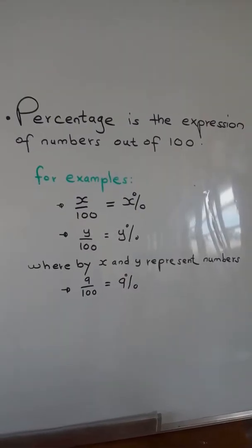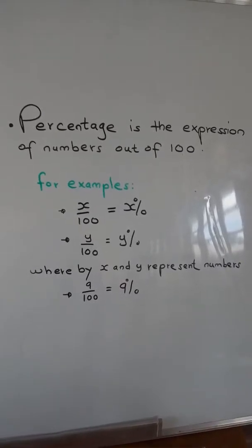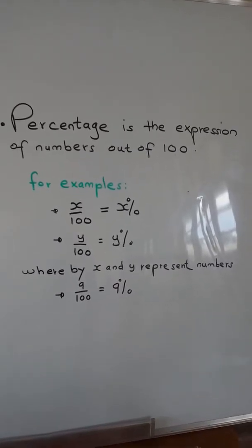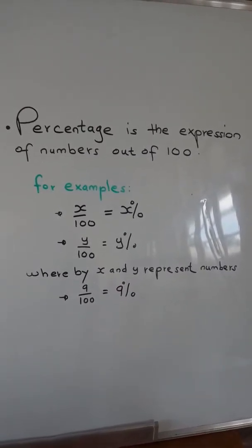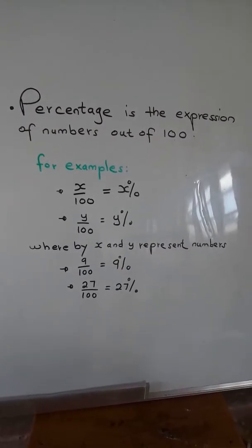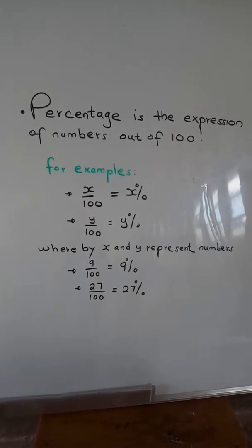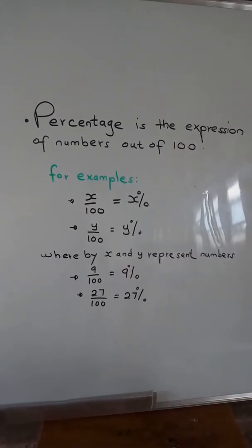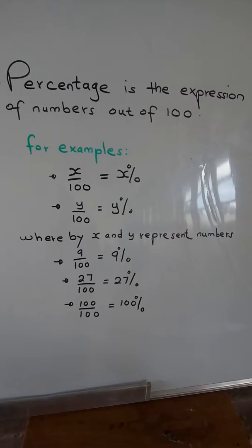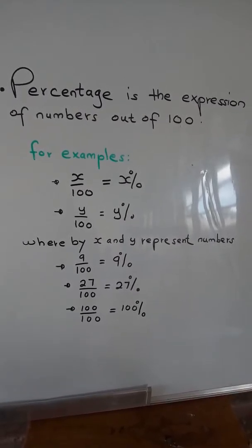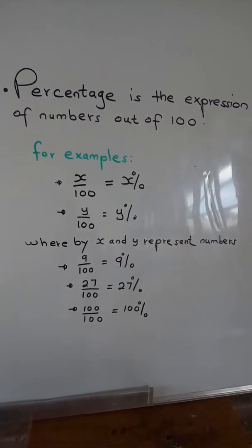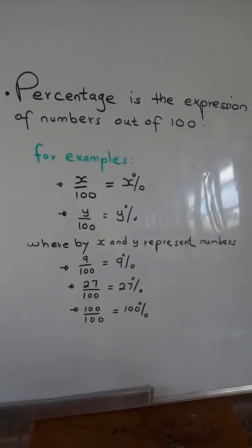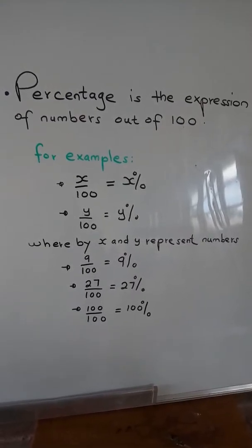For example, nine out of 100 is equal to nine percent. 27 out of 100 is equal to 27 percent. 100 out of 100 is equal to 100 percent.